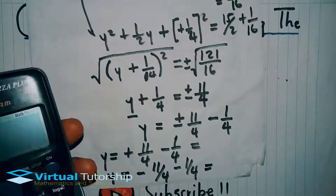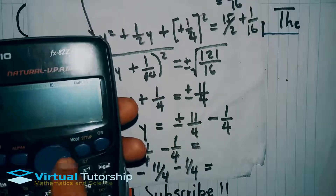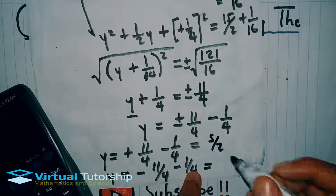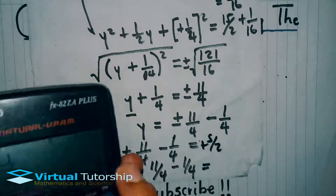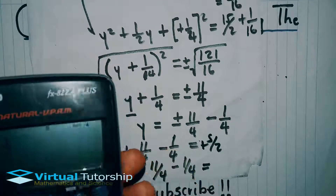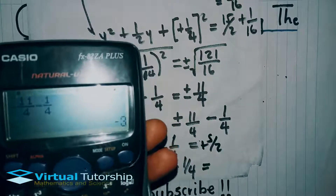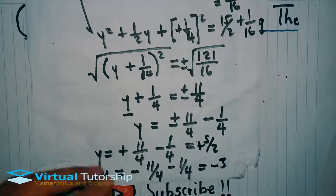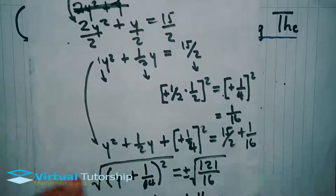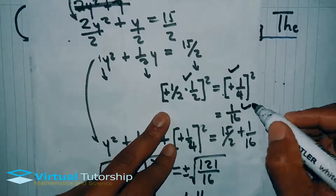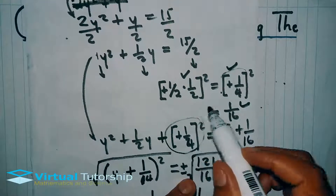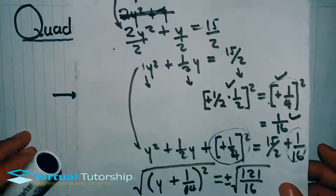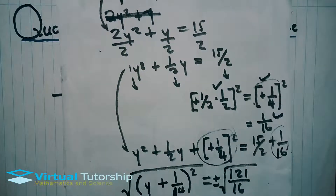So 11 minus 1 over 4 gives positive 5 over 2, and the other solution gives negative 3. So the two solutions are y equals 5 over 2 and y equals negative 3. This is how you complete the square. Thanks for watching and I'll see you in the next one.